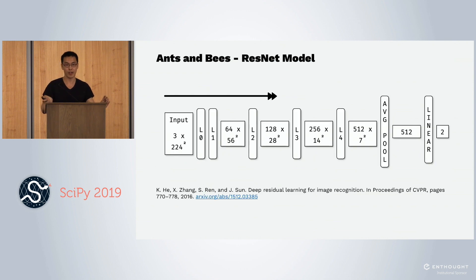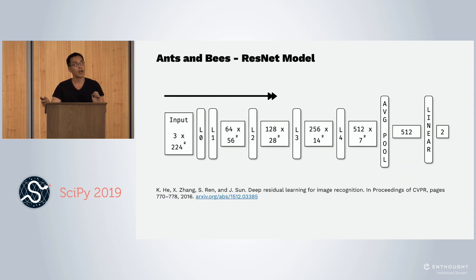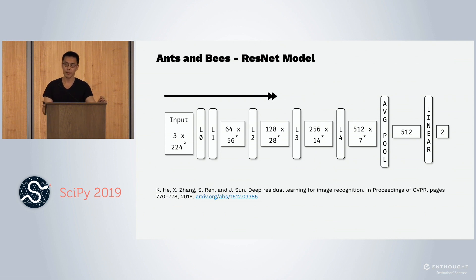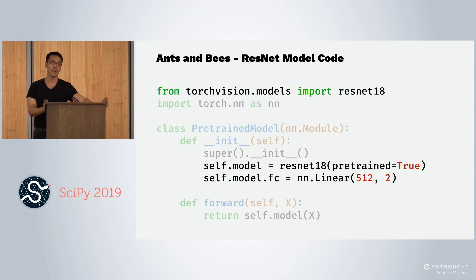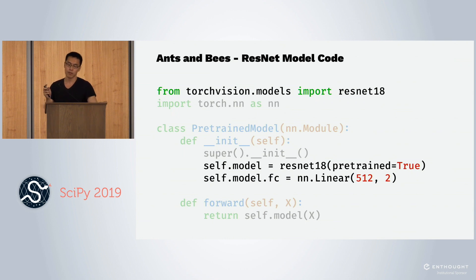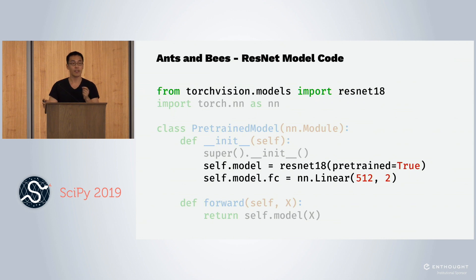For this dataset, we're going to use the ResNet model. It takes an input image of size 3×224 and outputs a vector of size 2, where 0 represents ants and 1 represents bees. To use Scorch, the first thing we do is define a PyTorch module by subclassing. In this case, the model uses a pre-trained ResNet-18, and we exchange the fully connected layer at the very end with a linear layer that outputs a vector of size 2.